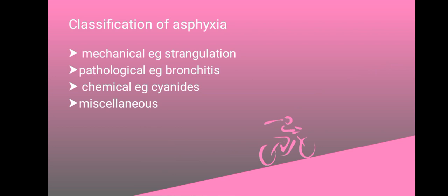When it comes to pathological asphyxia, these are types of asphyxiation brought about by diseases or illnesses. Examples include bronchitis, tumors, as well as acute edema. We have chemical asphyxia or chemical asphyxiation, which is brought about by chemicals — the body reacts with certain chemicals. These chemicals include cyanides, opium, barbiturates, etc.